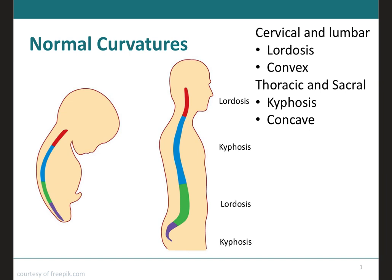To understand the abnormal vertebral column curvature, we first need to understand the normal curves of the vertebral column. When viewed from an anterior or posterior, a normal adult vertebral column will appear straight. But when viewed from the side, it shows four slight bends that are called normal curves.